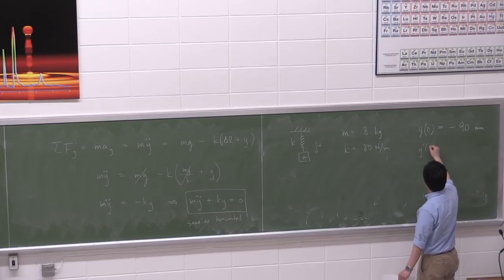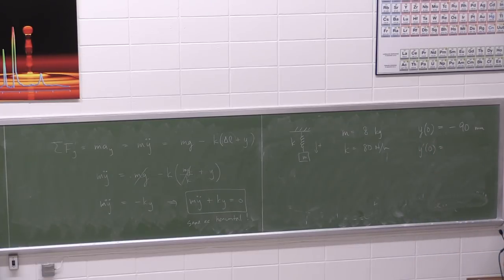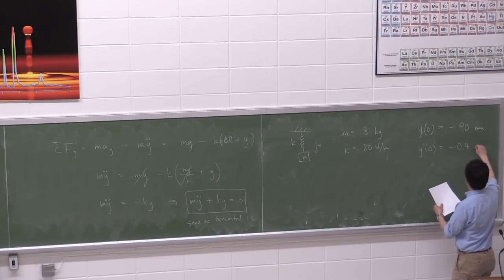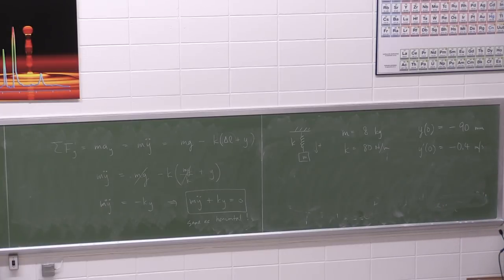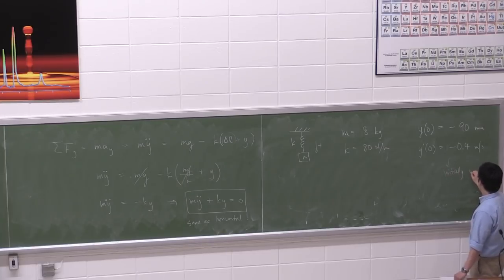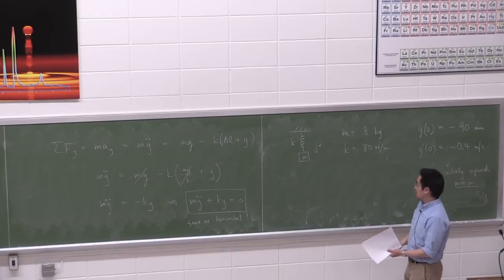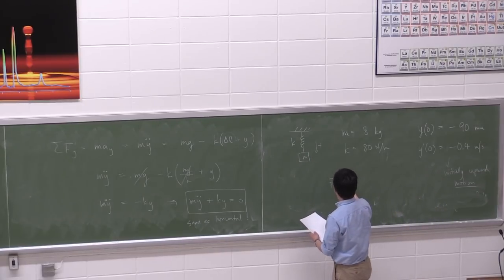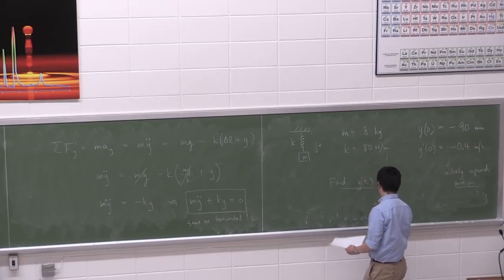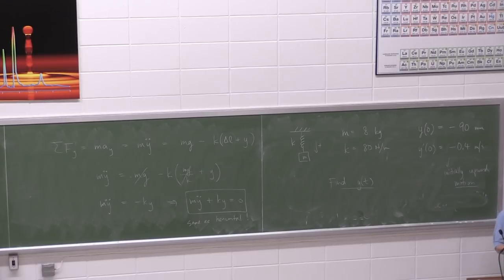I'm also giving you an initial velocity: ẏ(0) equals negative 0.4 meters per second. This minus sign means it is initially moving upwards. So last class we did one where the thing was at rest first, but now I've compressed it and given it a little nudge upwards. Find y(t) — the equation of motion for this bobbing mass.